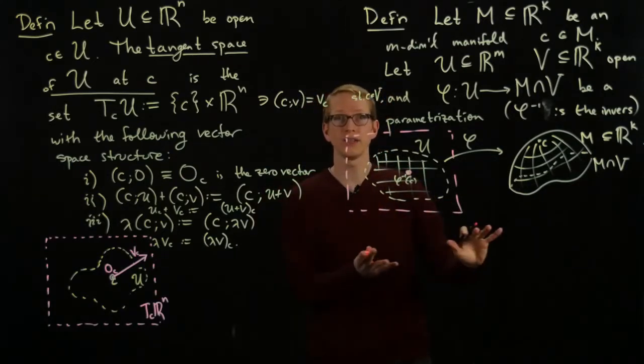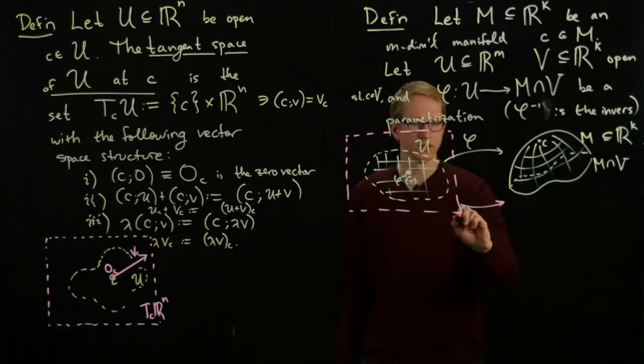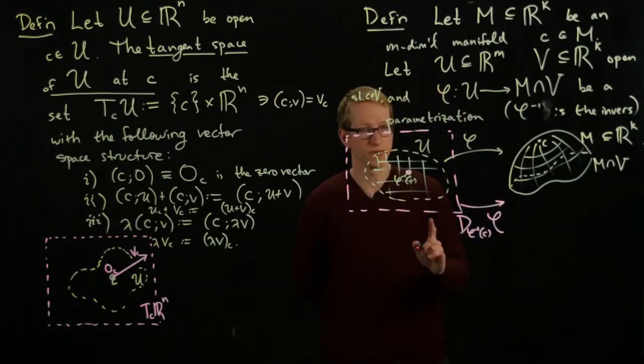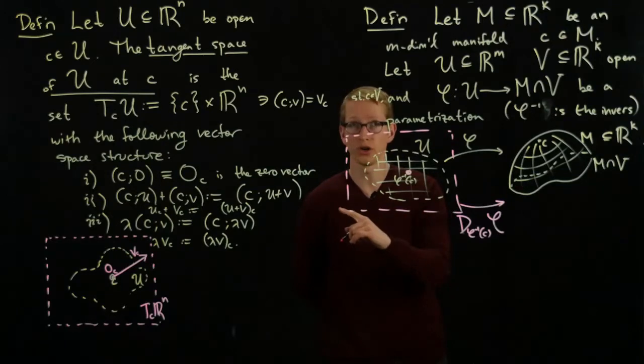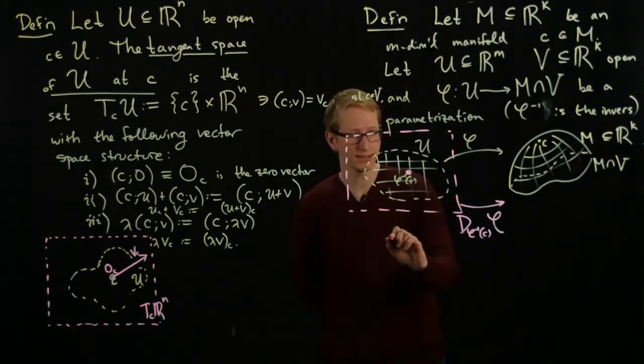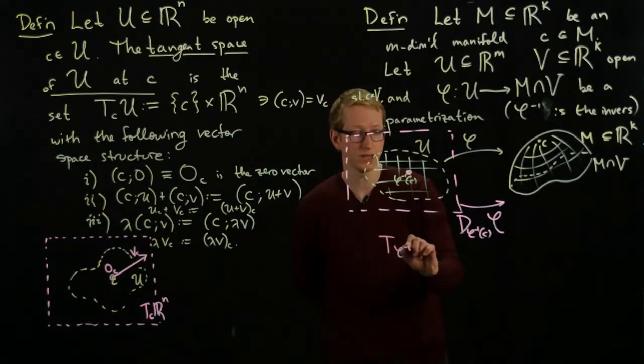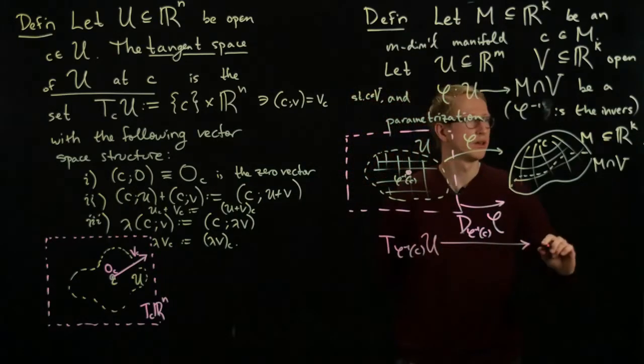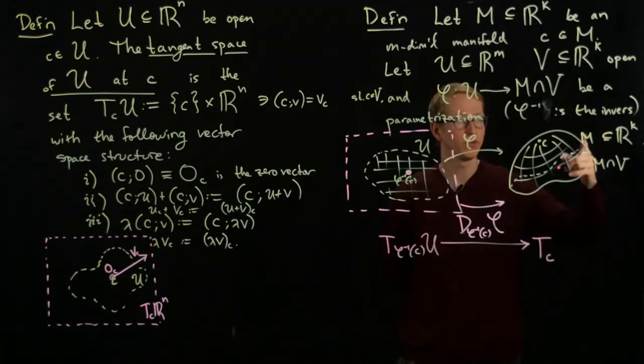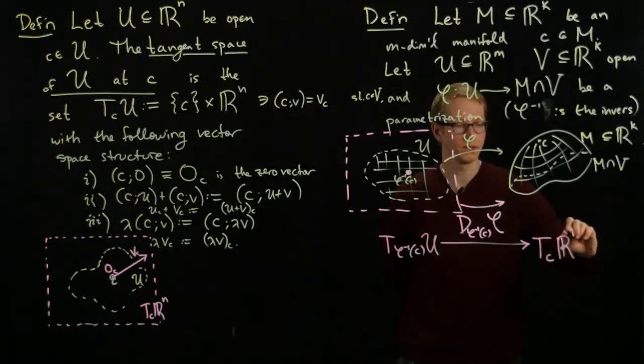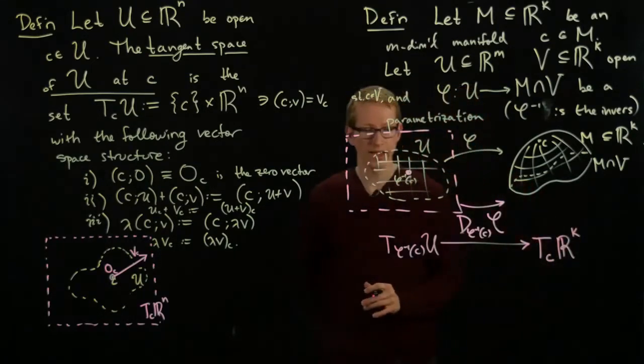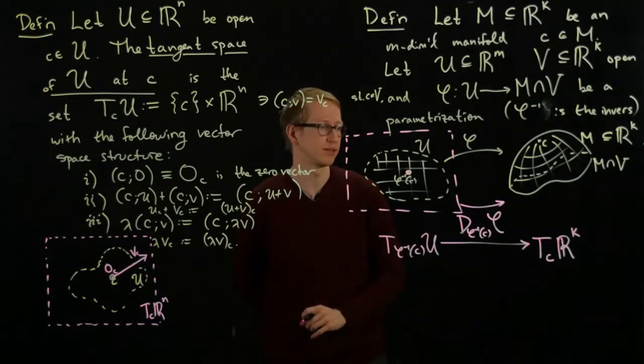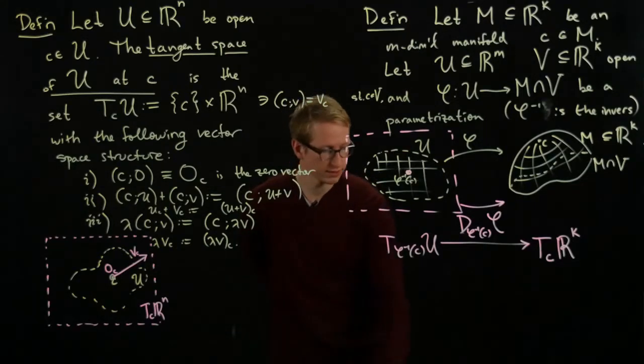Here we have this tangent space. At this point, we can calculate the differential. The differential at the point phi inverse c of phi gives us a linear transformation from Rm, but using our earlier notation, it's a linear transformation from T_{phi inverse c}U to TcRk, we're viewing it as a subset of Rk, and this defines a k by m matrix if we chose, for instance, a basis.